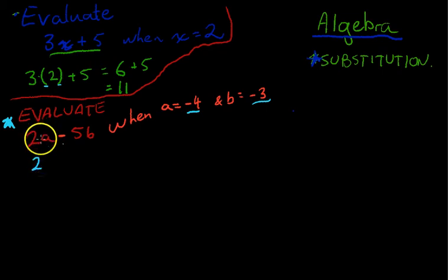So let's take a look. 2, and we're going to replace the a with whatever a is, but in brackets. 2 times negative 4 minus 5 times negative 3. Now the beauty of putting all of that in brackets is you could jump straight to typing that into your calculator exactly as it is, and your calculator would spit out the correct answer.